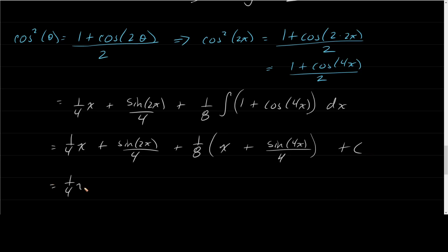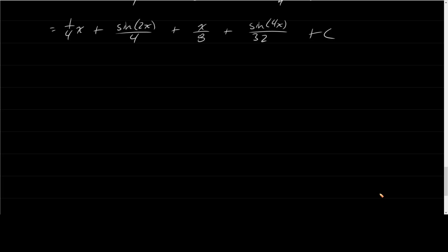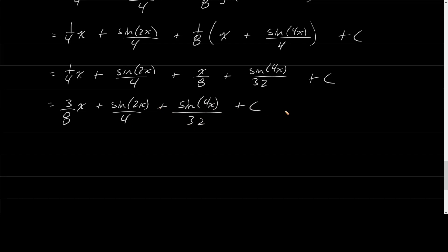Distributing and combining like terms: one-fourth x plus sine 2x over 4 plus x over 8 plus sine 4x over 32. Combining the x terms: one-fourth plus one-eighth equals three-eighths. The final answer is three-eighths x plus sine 2x over 4 plus sine 4x over 32, plus C. These sine terms could be rewritten with double-angle formulas, but this is a sufficient final answer.